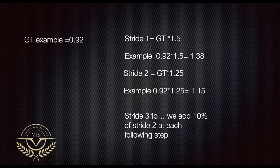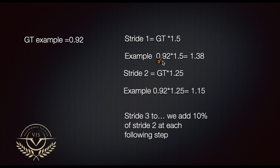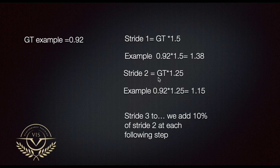Let's assume our athlete has a GT of 0.92 meters (92 centimeters). For stride number one — from the exit of the blocks — we multiply the GT by 1.5: 0.92 × 1.5 = 1.38 meters. So from the rear plate of the block to the first contact of step one, we mark the tape at 1.38 meters. For step number two, we multiply the GT by 1.25: 0.92 × 1.25 = 1.15 meters. So between the strike of step one and step two, the markers are placed 1.15 meters apart.